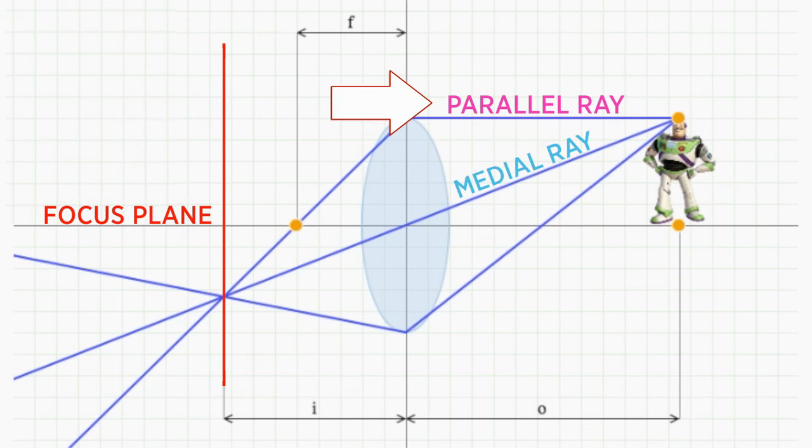If we can find the intersection of those two rays, then we'll know where all rays from this object will come into focus. Pretty cool. Let's pause here so you can build your intuition about this diagram using the next exercise.